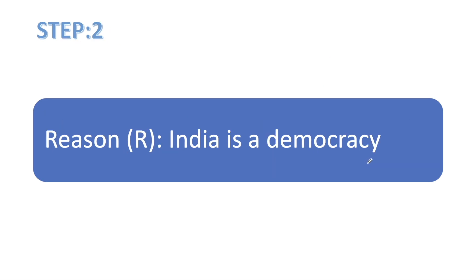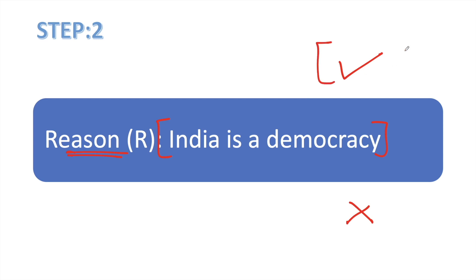Step number 2 में हम similarly अपने reason के साथ करेंगे. We are going to read our reason and then analyze कि वो सही है या गलत. The reason says: 'India is a democracy.' Yes, according to me, ये सही statement है, तो मैंने इसके आगे टिक लगा दिया.